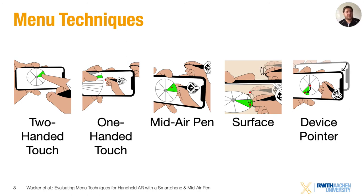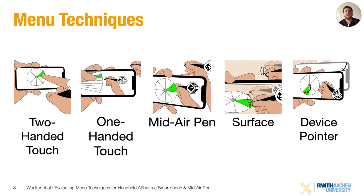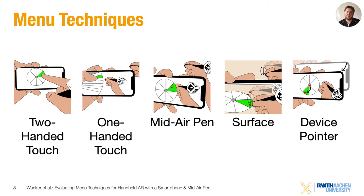We evaluated these five menu techniques with 15 participants and measured the success rate, interaction time, movement, and subjective ratings, as well as a ranking of all the techniques. The participants liked the two-handed interaction on the touch screen the most, followed by the one-handed touch screen interaction and the midair interaction with the pen.